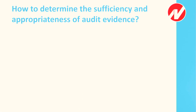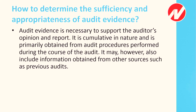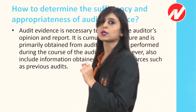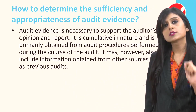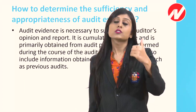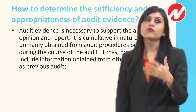How do we determine the sufficiency and appropriateness of audit evidence? Audit evidence is necessary to support the auditor's opinion and report. It is cumulative in nature and is primarily obtained from audit procedures performed during the course of the audit. Without audit evidence, an auditor cannot give an opinion. Audit evidence is gathered as we perform our audit procedures — it can also come from previous audits or from sources inside and outside the entity.